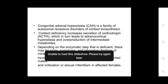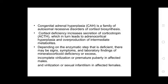Congenital adrenal hyperplasia is a familial autosomal recessive disorder of cortisol biosynthesis. Cortisol deficiency increases secretion of corticotropin (ACTH), which in turn leads to adrenocortical hyperplasia and overproduction of intermediate metabolites. Depending on the enzymatic step that is deficient, there may be signs, symptoms, and laboratory findings of mineralocorticoid deficiency or excess, incomplete variations of premature puberty in affected males, and variations in sexual infantilism in affected females.